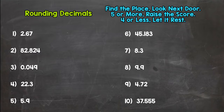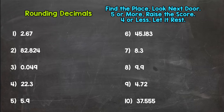Today we're going to be rounding decimals, and rounding decimals is very similar to rounding whole numbers. If you know your rounding rules, this is going to be pretty easy for you. There's just a very minor difference between whole numbers and decimals, but your rounding rule is the same. I've put the rounding rule up in the top right for a refresher: find the place, look next door — five or more raise the score, four or less let it rest.